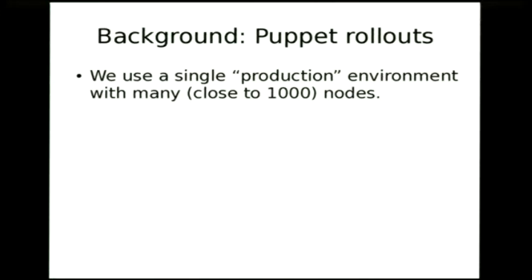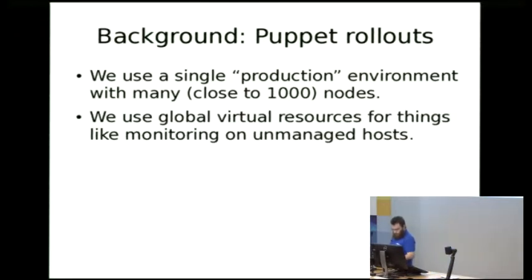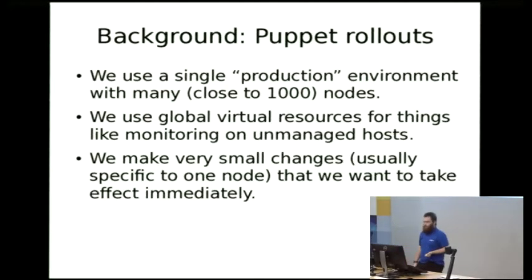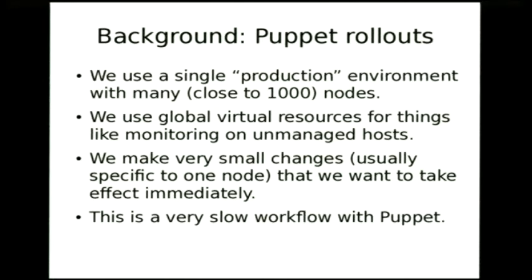To give some background as to why we made the decisions we did, we use a single large production environment in Puppet with close to 1,000 nodes. We also have some global virtual resources for things like monitoring on nodes that we don't run Puppet, which are then collected by monitoring servers. We tend to use Puppet such that we make very small changes, often specific to one node, and we want to see that change take effect straight away. And that's a very slow workflow with Puppet.